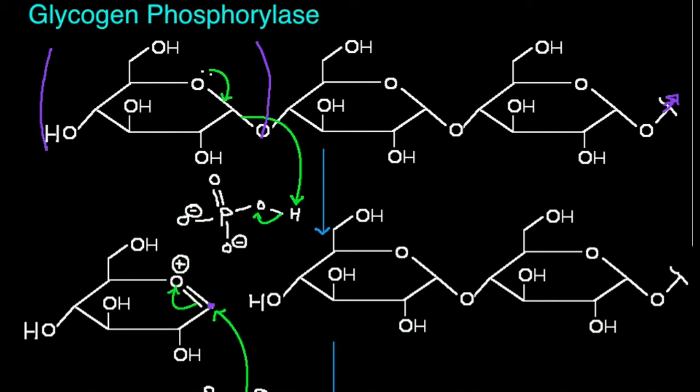Glycogen phosphorylase does not simply hydrolyze off a simple glucose. It removes the end glucose parts as glucose 1-phosphate. Let's look and see exactly how that occurs.